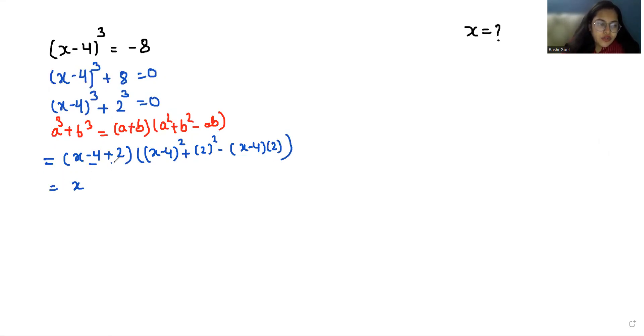So x - 4 + 2 = x - 2. Here we are going to use the identity (a - b)² = a² + b² - 2ab. So (x - 4)² = x² + 16 - 8x, plus 2² is 4, minus 2x, plus 8.